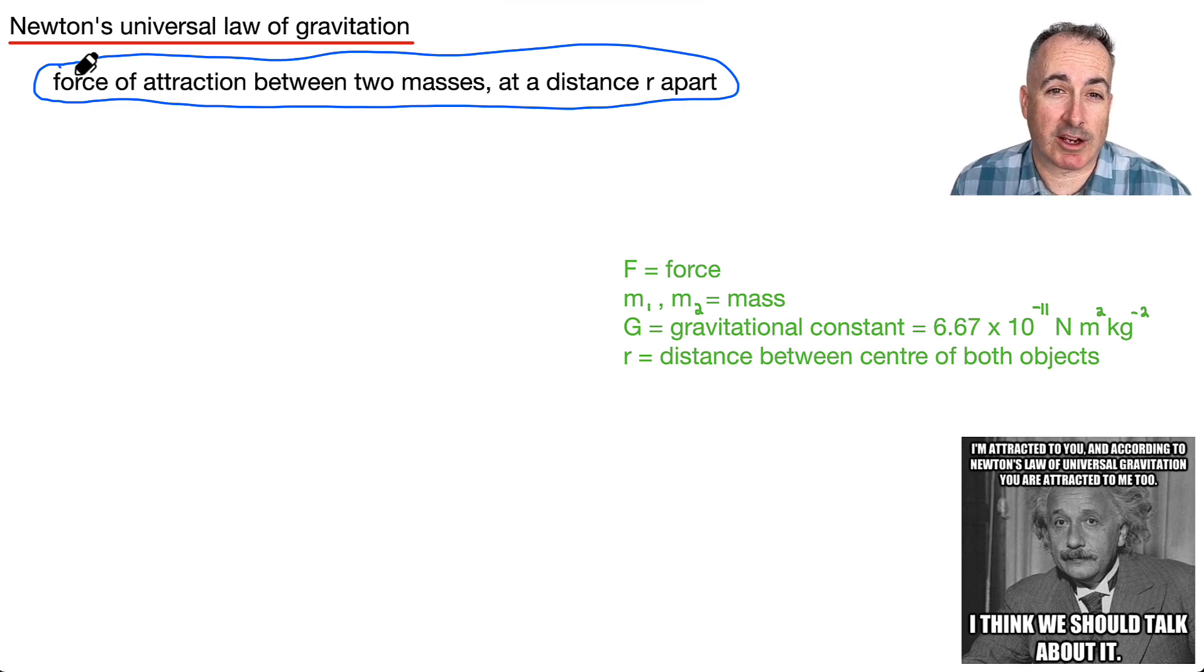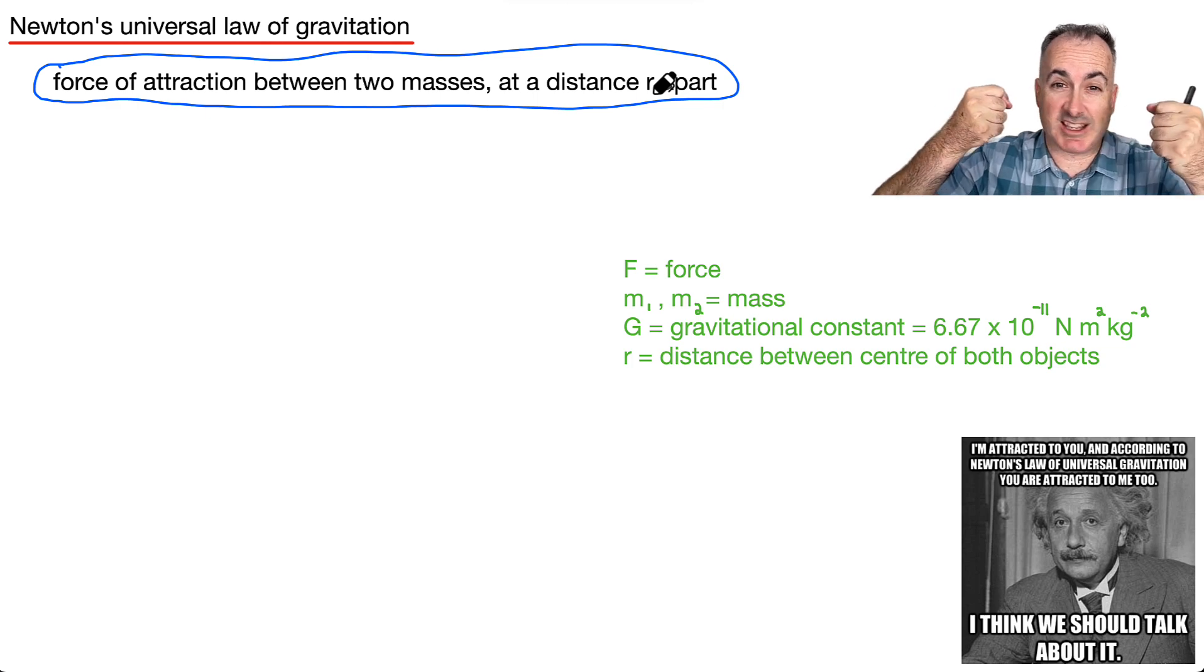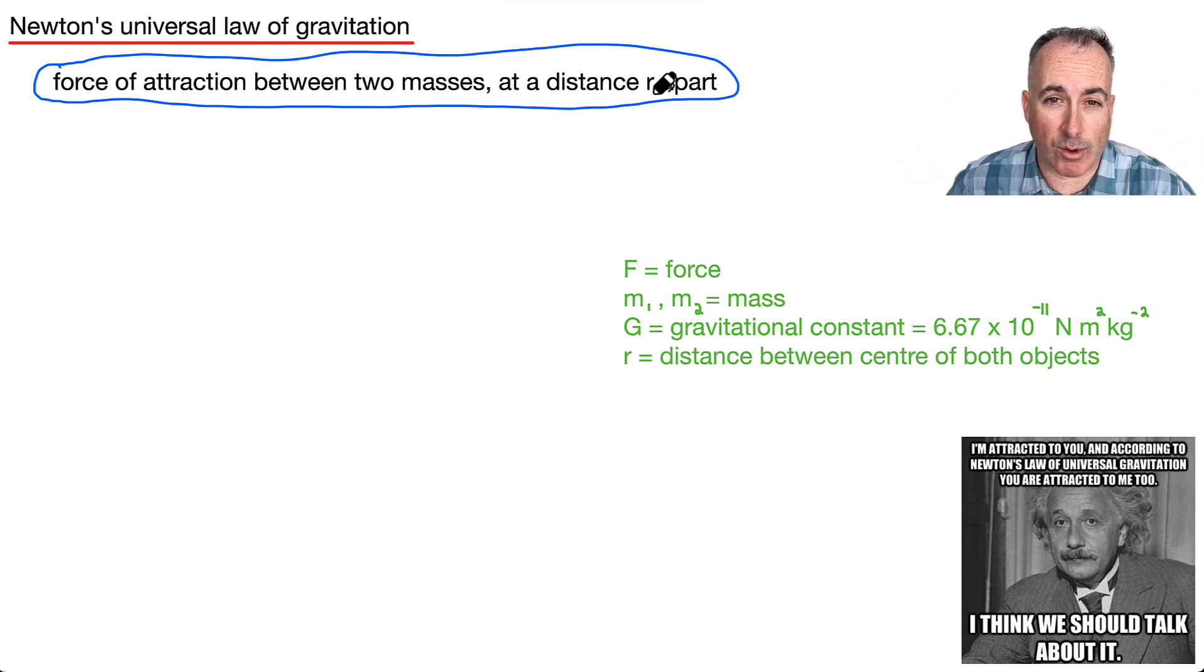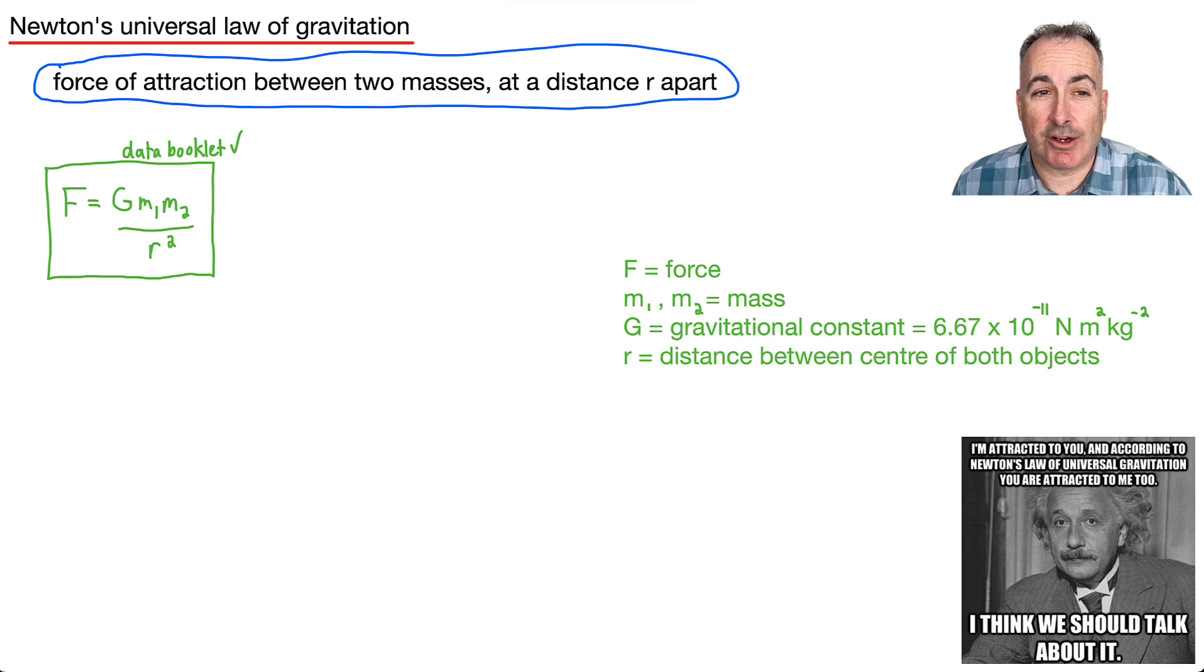It's the force of attraction between two masses that are separated by distance, like the center of their masses. If I have one mass and another mass, they're going to attract each other, doesn't matter what. We have an equation for it that you don't have to memorize—you can look it up—and it goes like this: F equals G m1 m2 over r squared.